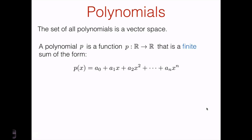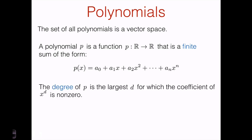The next example we're going to look at is the set of polynomials. This is also a set of real-valued functions of a special form. A polynomial is a finite sum of the form a₀ plus a₁ times x plus a₂ times x squared, up to aₙ times x to the power n. The degree of a polynomial is the largest d for which the coefficient of x to the power d is non-zero. So if aₙ is not equal to zero, then the degree of this polynomial would be n.